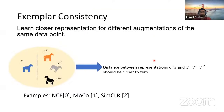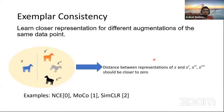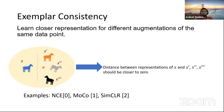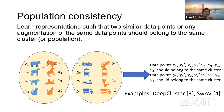What is exemplar consistency? We want to learn closer representations for different augmentations of the same data point. For example, you have an image of a horse and you transform it — change its color, change the background, zoom in, zoom out, rotate it. The distance between the representations of all these augmentations should be closer to zero. Exemplar consistency means: for the same example, various augmentations should be closer to each other in representation space.